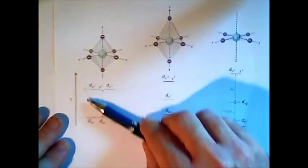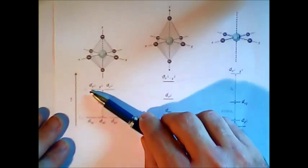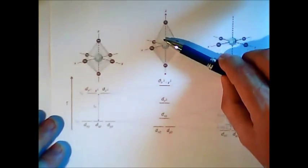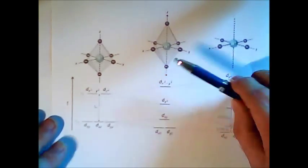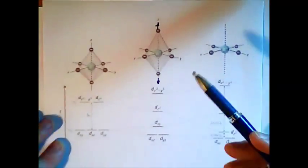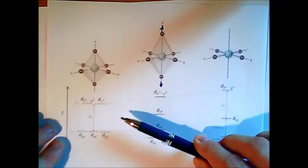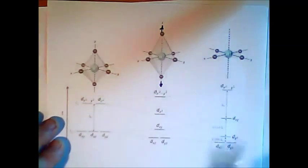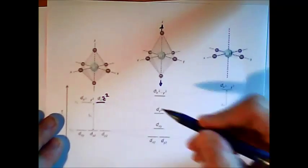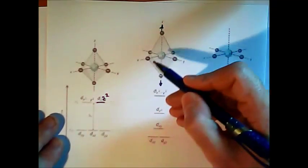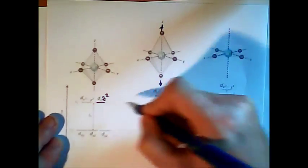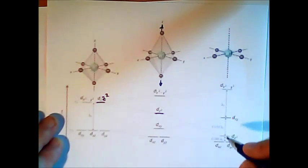We can look at this starting from the octahedral case, the typical 2 over 3 pattern. Now we take away the ligands which are on the z axis. So take them slowly out. What will happen with the interactions? Now mostly the d z square orbital of the metal will be influenced because now the repulsion between the d z square and these two ligands is removed. That means this orbital will go down.